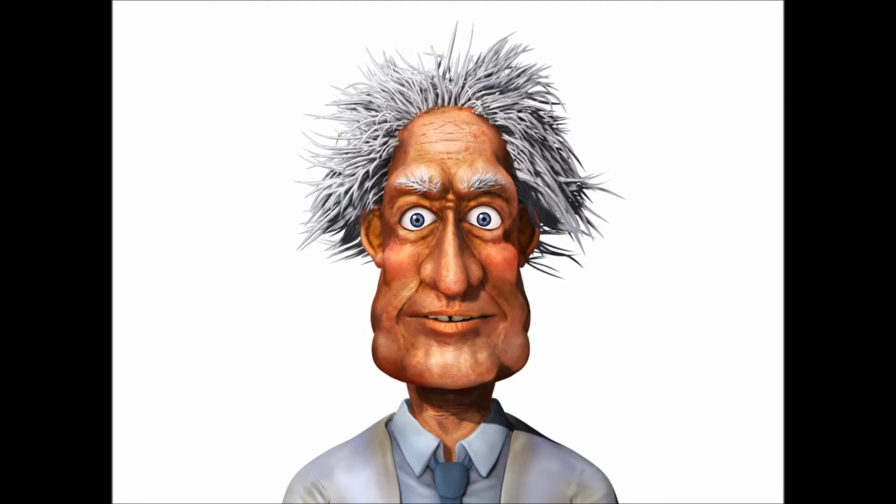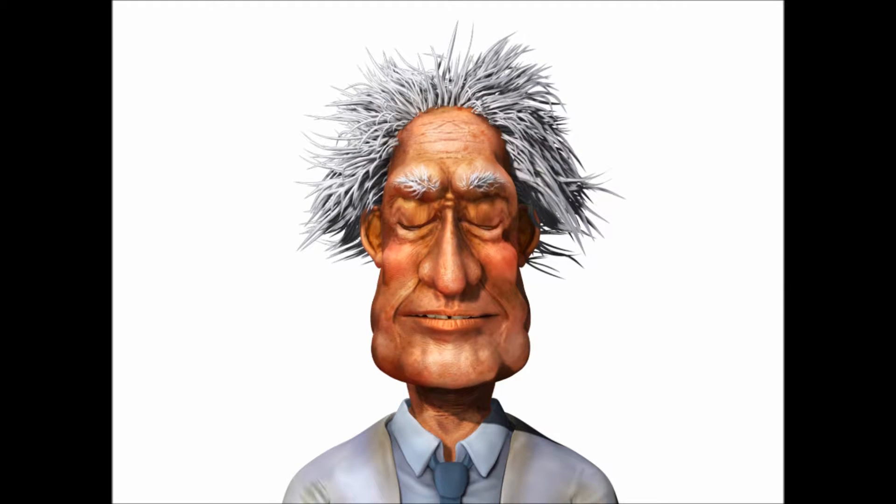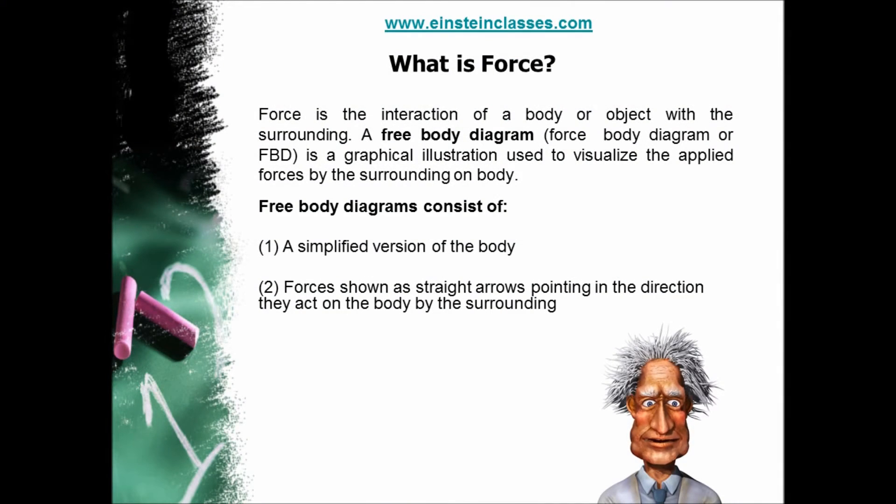In our mind the first question is arising. What is force? Now we are discussing about force so that we can understand the launching of a rocket. Force is applied on a body by the surrounding with which the body is interacting directly or indirectly. We have to draw a diagram of the body showing all forces acted on the body by the surrounding. This diagram is called free body diagram or FBD. To understand this we have to take some examples.